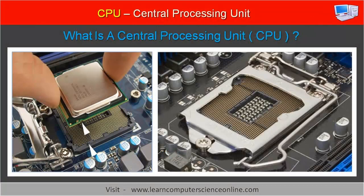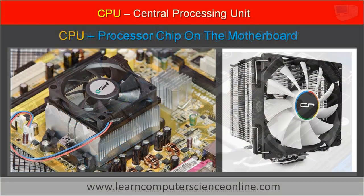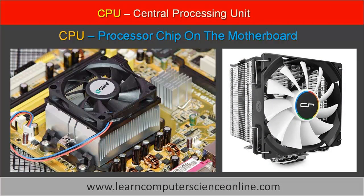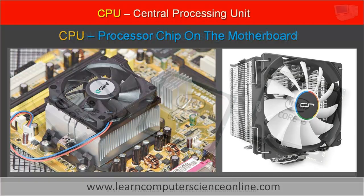The CPU chip is placed on the motherboard into the processor socket with a locking lever mechanism. The processor chip is firmly placed into the socket on the motherboard. A heatsink is mounted on top of the processor chip, which protects the processor chip from excessive heat generated.